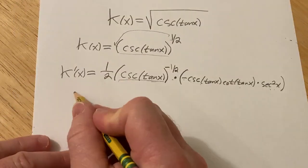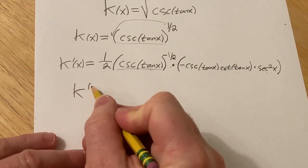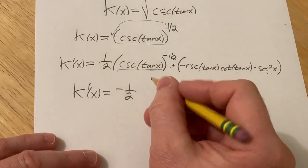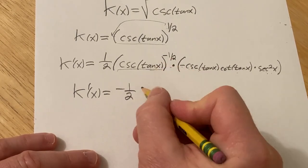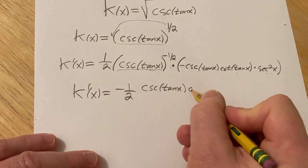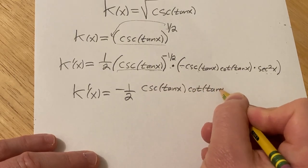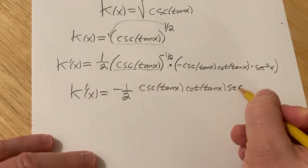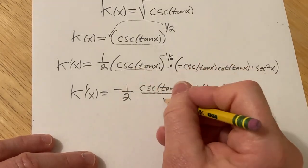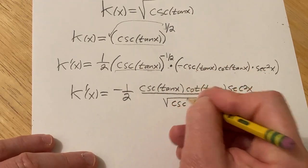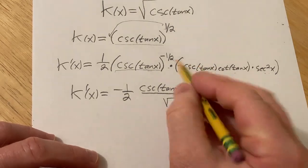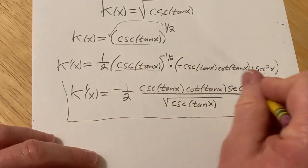This negative here I'm going to put it in the front, so k prime of x is equal to negative one-half. I'm going to bring the power downstairs and make it a square root, so it'll be cosecant of the tangent of x, cotangent of the tangent of x, secant squared of x, all divided by the square root of cosecant of tangent of x. And that would be the derivative.